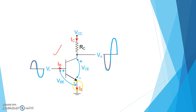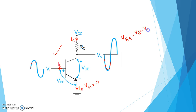The emitter is directly grounded, so we can say the emitter voltage VE is equal to zero. Therefore, VBE — that is the base-emitter voltage — is equal to VB minus VE. Since VE equals zero, VBE equals VB, meaning the base-emitter voltage is equal to the base voltage.